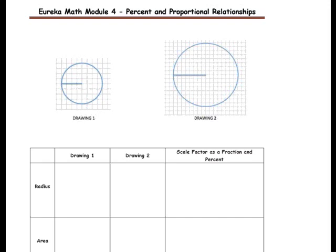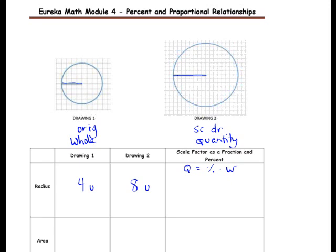For our next drawing, we have a radius in drawing 1 of 4 and a radius in drawing 2 of 8. The scale factor: quantity equals percent times whole. The original is drawing 1 and the scale drawing is drawing 2. The original is the whole and the scale drawing is the quantity. So 8 equals C times 4. Divide by 4: C equals 2 over 1 as a fraction, 2 as a decimal, and 200% as a percent. That is our scale factor.